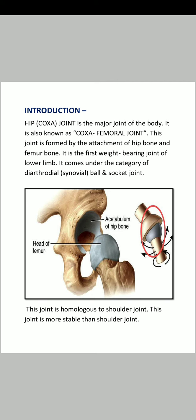Why is this? This is because in the shoulder joint the glenoid cavity is very shallow. There is a glenoid labrum around the glenoid area, and similarly the acetabular labrum deepens the socket so that the head of the femur fits more securely, making the hip joint more stable.